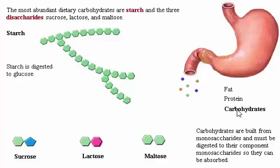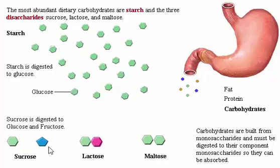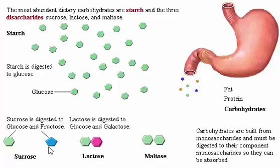Starch is digested to glucose. Sucrose is digested to glucose and fructose. Lactose is digested to glucose and galactose. Maltose is digested to glucose.